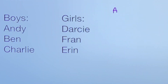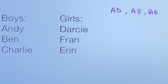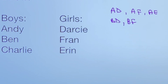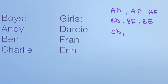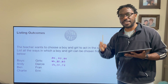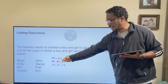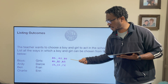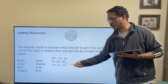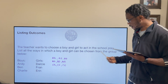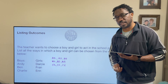Starting with Andy: Andy can go with Darcy, or Andy can go with Fran, or Andy can go with Aaron. Then we choose Ben: Ben can go with Darcy, Ben can go with Fran, or Ben can go with Aaron. Then Charlie: Charlie can go with Darcy, Charlie can go with Fran, or Charlie can go with Aaron. That's what I mean by using a system — keep one boy fixed and pair all the girls with him. There are nine possible ways to make that choice.